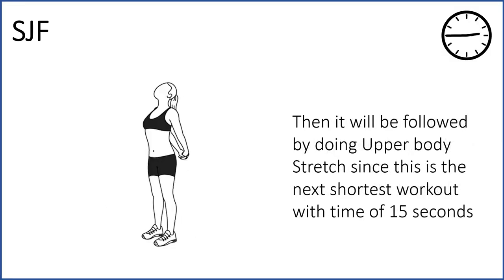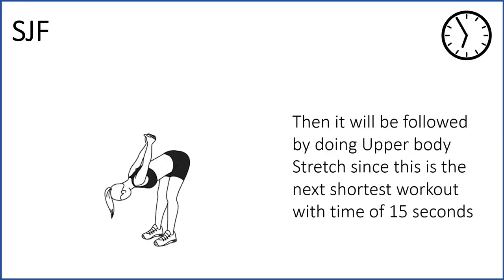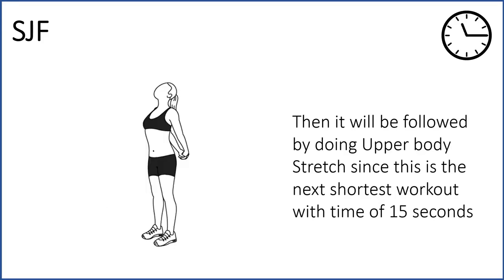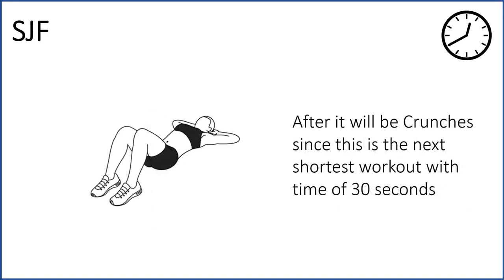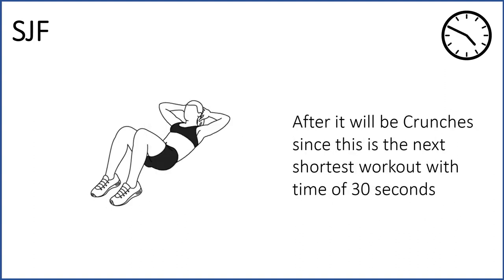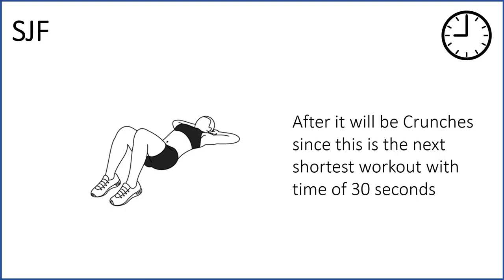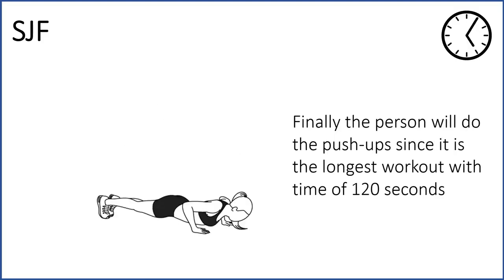After that, it will be followed by upper body stretch since this is the next shortest workout with a time of 15 seconds. Then it will be crunches since this is the next shortest workout with a time of 30 seconds. Finally, the person will do push ups since it is the longest workout with a time of 120 seconds.